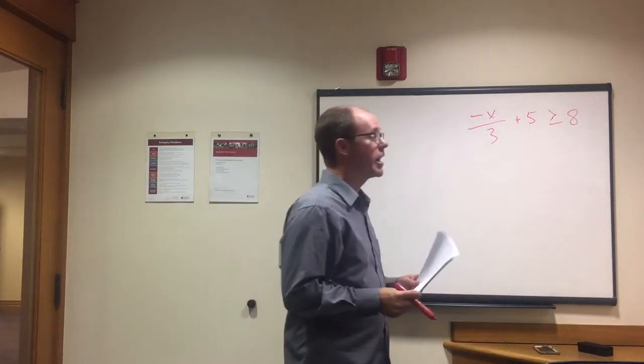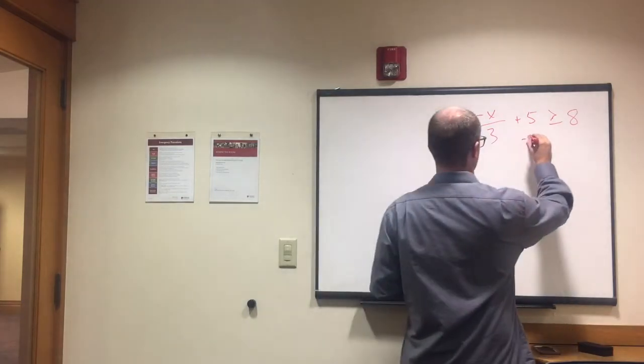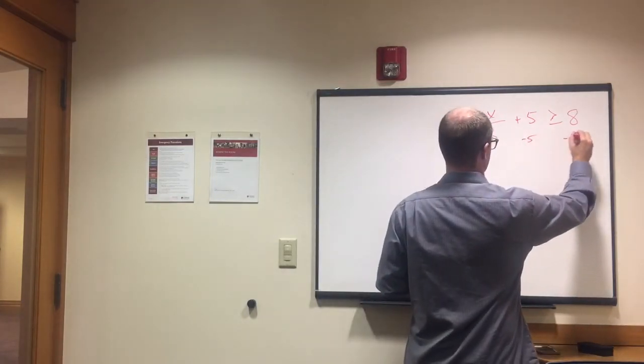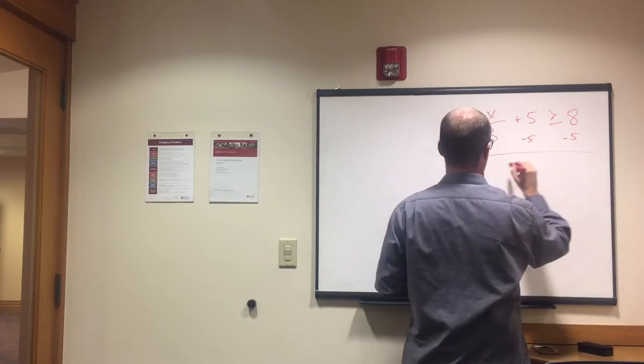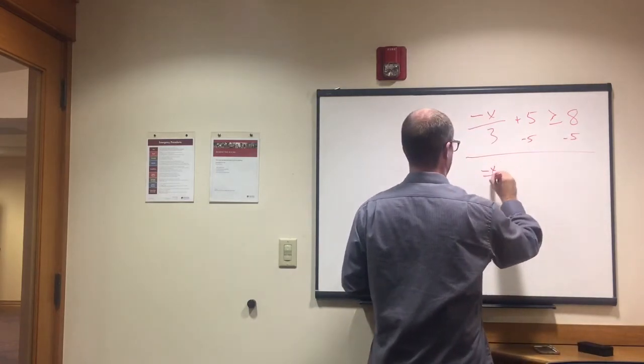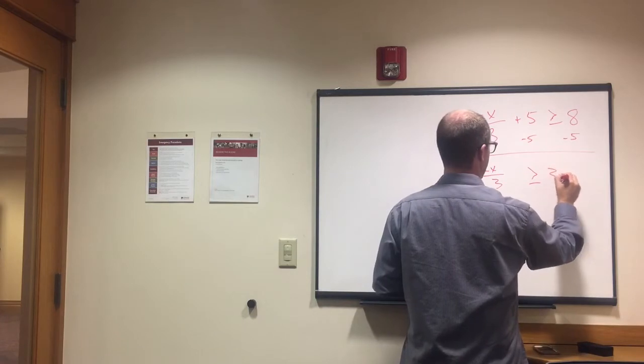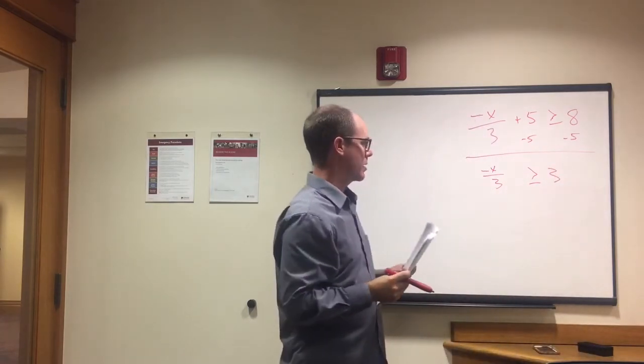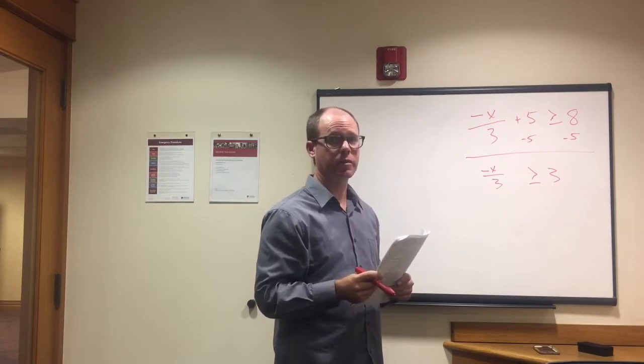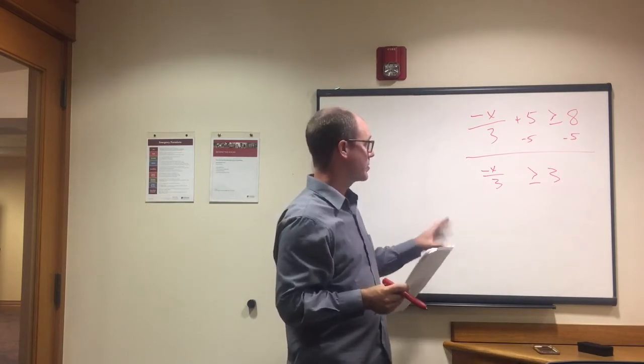So the first thing here, we're going to subtract 5 from both sides. And we have -x/3 ≥ 3. Okay. So we have two steps left because we want to get a positive x by itself.